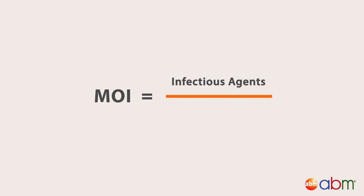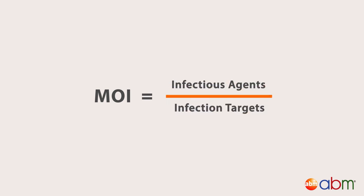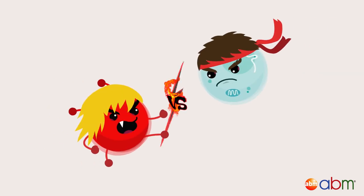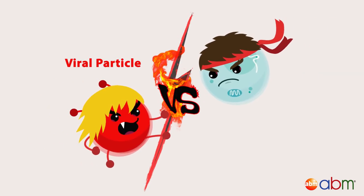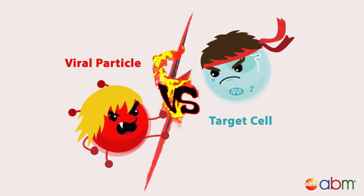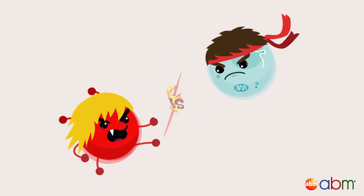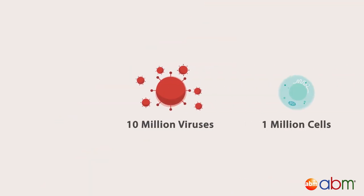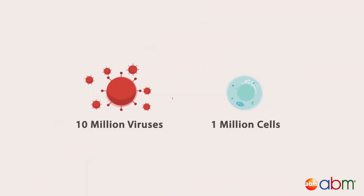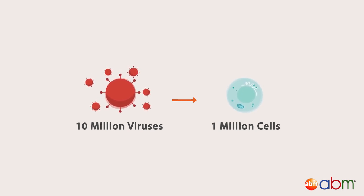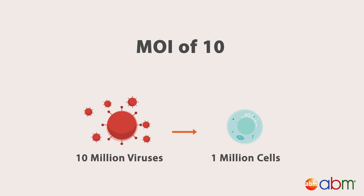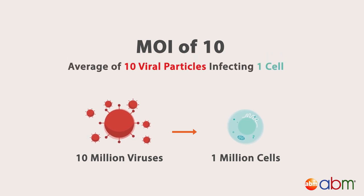MOI is the ratio of infectious agents to infection targets. In many cases, it is the ratio of viral particles to target cells in a defined space, such as a cell culture well. For example, if you add 10 million viruses to 1 million cells, you'd have an MOI of 10, and an average probability of 10 viral particles infecting one cell.